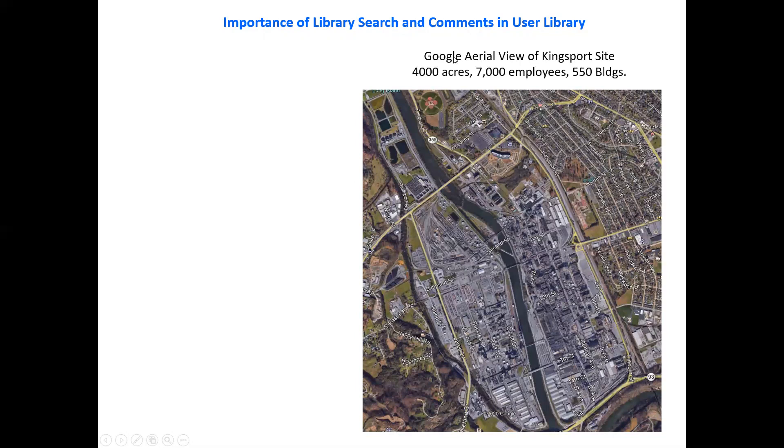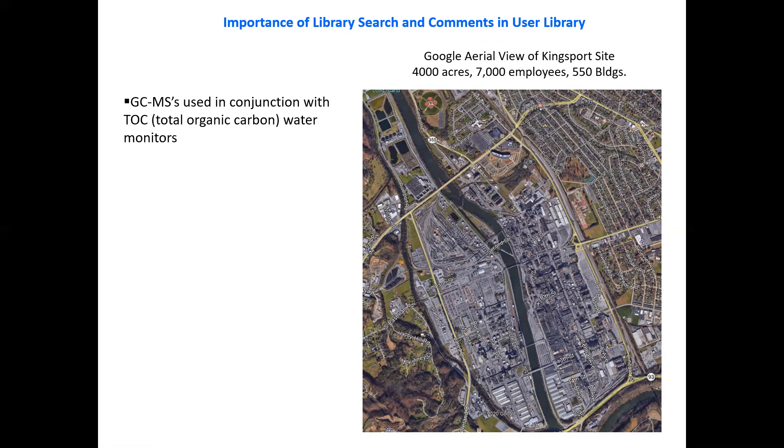What's the importance of the library's search and comments in the user library? One particularly important area is in environmental monitoring of our site. Here's a Google area view of the Kingsport site. It's about 4,000 acres with 7,000 employees and 550 buildings with the river that runs down the center that could lead to contamination from processes within the plant. GCMSs are used in conjunction with many total organic carbon water monitors within the plant. And when those go out of spec, they grab a sample and analyze it by GCMS.